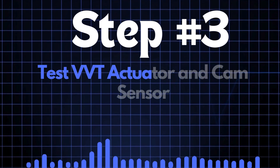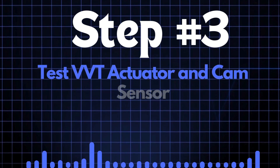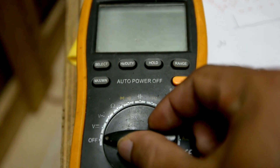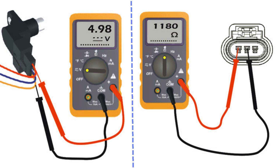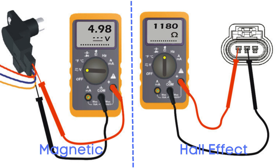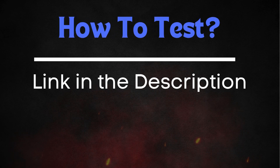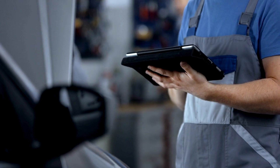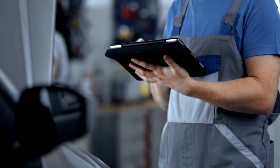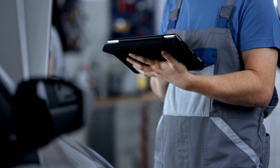Step 3: Test the VVT actuator and cam sensors. You can test the VVT actuator and cam sensors using a multimeter. The process can vary depending on the type of cam sensor you have. If your vehicle uses a hall effect sensor, the testing method will differ from that of a permanent magnetic sensor. To learn more about testing the VVT actuator and cam sensors, check out our detailed video on this topic.